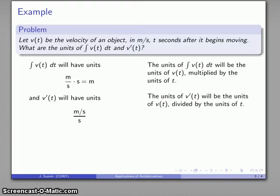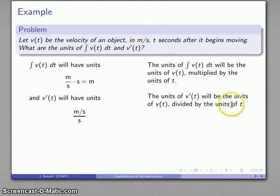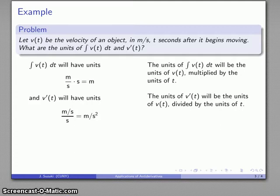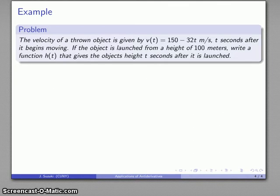How about the derivative itself? The units of the derivative are going to be the units of the function divided by the units of the independent variable. So v of t has units meters per second, and t has units seconds, so the derivative is going to have units meters per second over seconds, which simplifies to meters per second squared, or meters per second per second. So whatever the derivative measures is something measured in meters per second squared. And this additional analysis helps in any sort of problem.